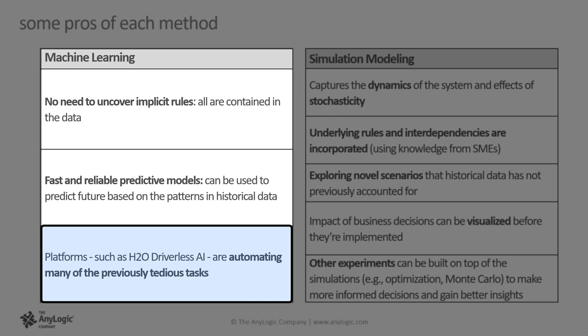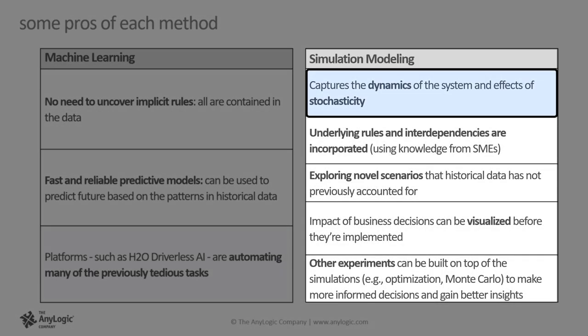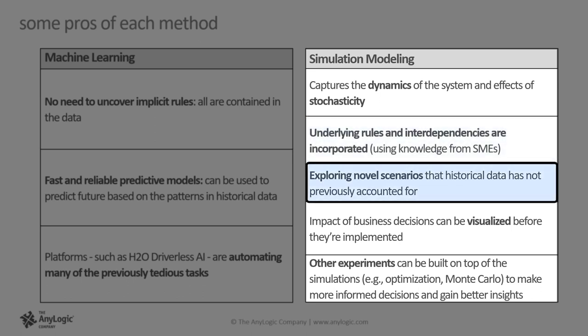ML models can predict the future based on the patterns inferred from historical data. Platforms such as H2O driverless AI are automating many of the previously tedious tasks that were needed for successful application of ML. Simulation, on the other hand, is great in capturing the dynamics of the system and effects of stochasticity. In simulation modeling, the knowledge and expertise of SMEs help to uncover the rules and causal inference that govern the system. We can explore novel scenarios that historical data has not previously accounted for. Simulations can visualize the impact of business decisions before implementing them. With simulation, you can visually communicate and convince.